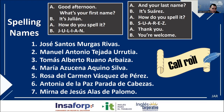What's your first name? Jose. How do you spell it? J-O-S-E. And your last name? Murgas. How do you spell it? M-U-R-G-A-S. Thank you. You're welcome.